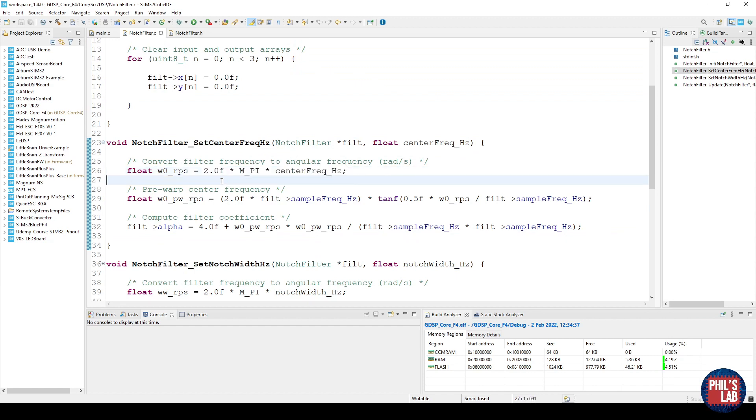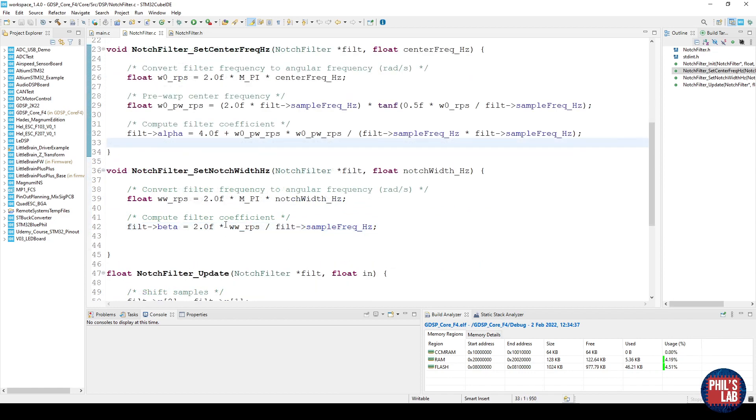The set center frequency function essentially converts our center frequency in hertz to an angular frequency and the way we do that is multiply by 2 pi. Then because I've used the Tustin transform to discretize my continuous time system, I need to pre-warp the center frequency otherwise my center frequency won't match between my analog and digital domains and I've just used the formula we saw in the slides. Then I can pre-compute my filter coefficient and I'm doing that so I don't have to on every update step do this computation so I save a bit of time.